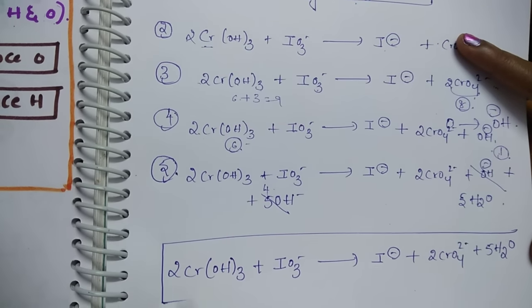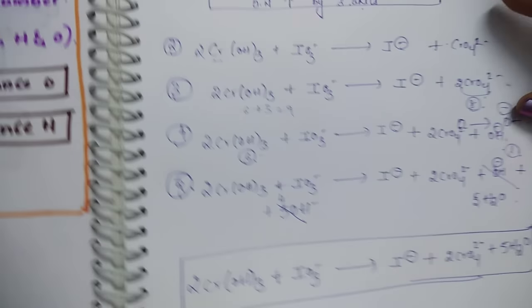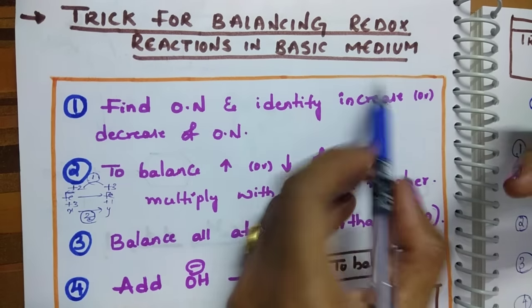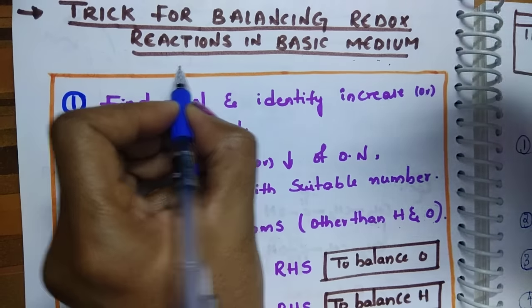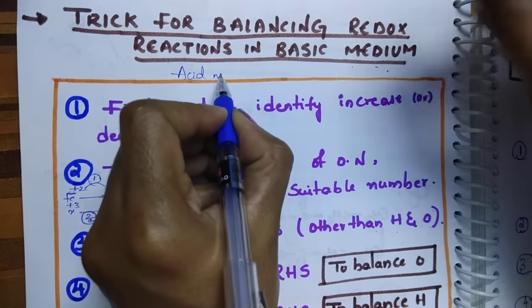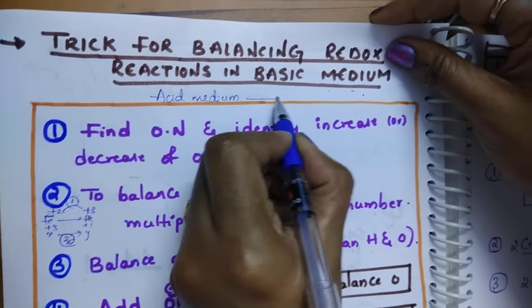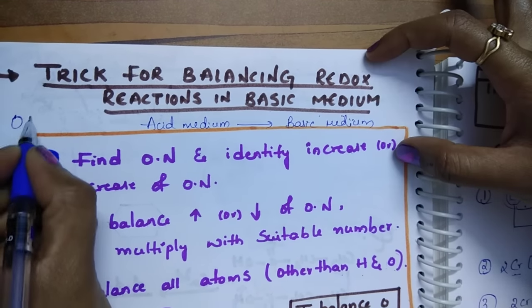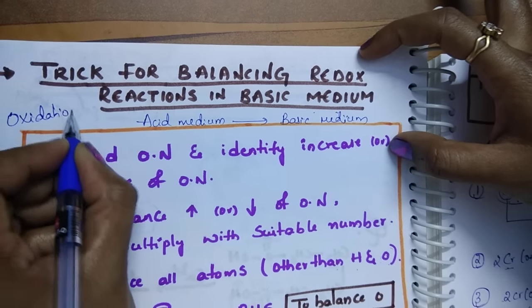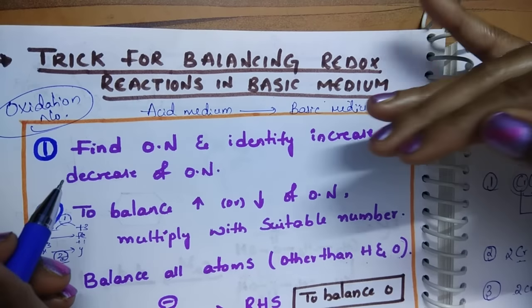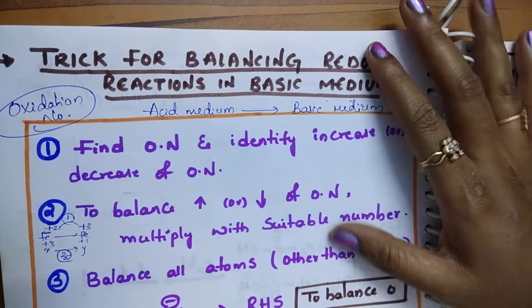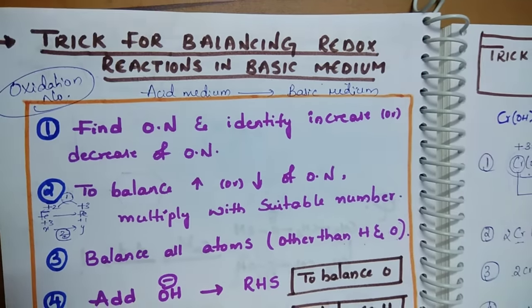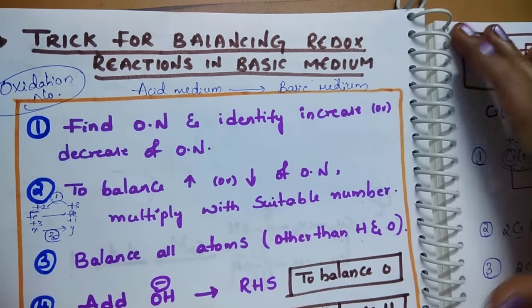This is the balanced redox reaction in basic medium. I already uploaded a video on balancing redox reactions in basic medium where I discussed converting an acidic-medium reaction directly into basic medium. In this session I discussed the oxidation number method, and in my next video I am going to discuss the ion-electron method. Thanks for watching — I hope this will be useful for you. Thank you all for loving my videos.